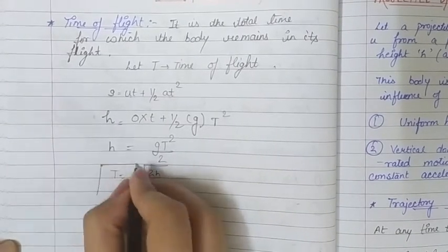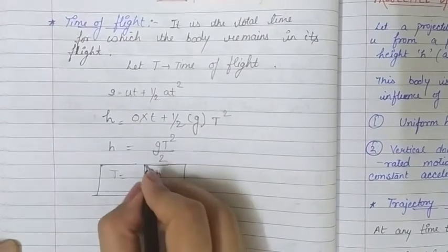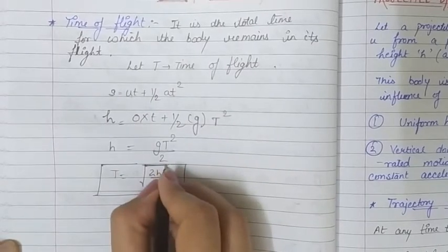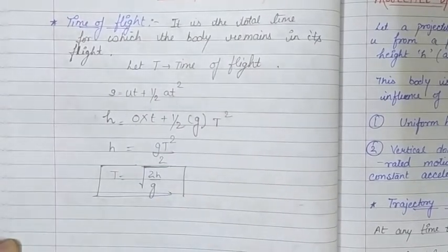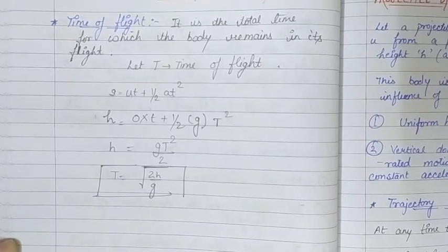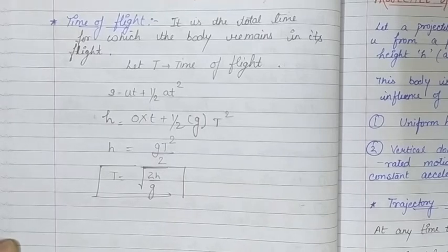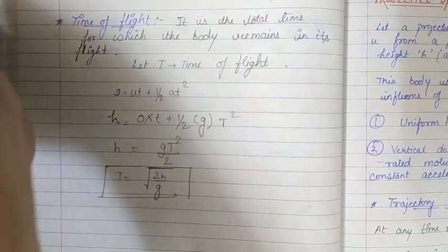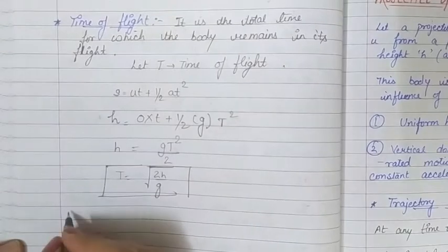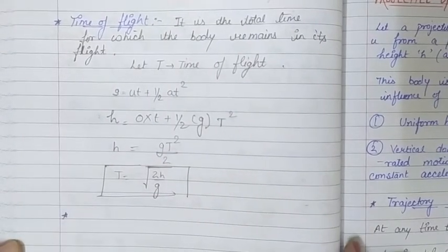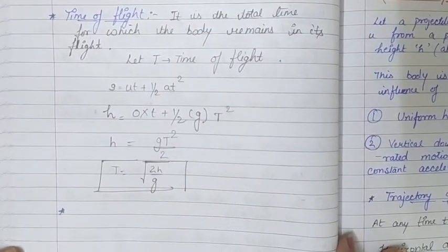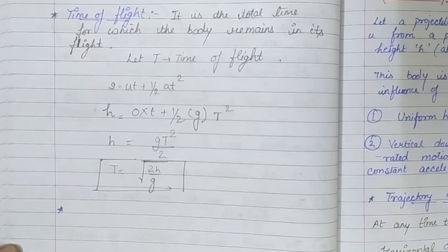Solving h = ½gT², we get T² = 2h/g, so T = √(2h/g). This is the time of flight — the time taken by the object to travel from point O to point A.